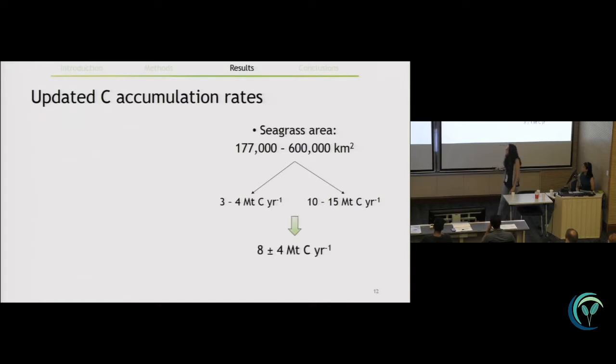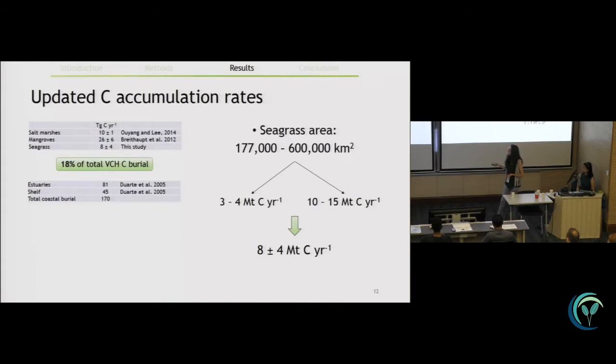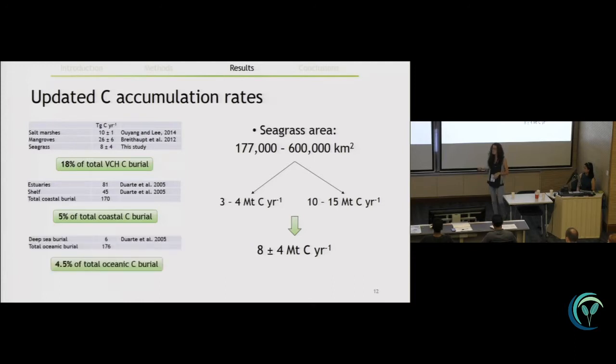And if we take the central estimate and then we combine it with that estimate of mangrove and salt marshes, we see that seagrass are contributing to about 20% of the total carbon that is buried in vegetated coastal habitats.